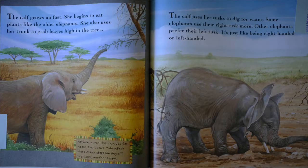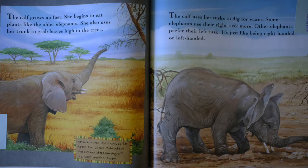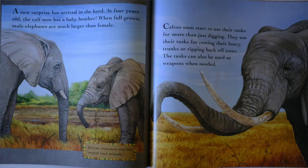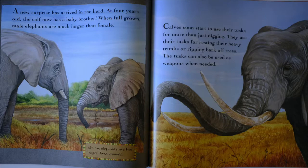The calf uses her tusks to dig for water. Some elephants use their right tusk more. Other elephants prefer their left tusk. It's just like being right-handed or left-handed. A new surprise has arrived in the herd. At four years old, the calf now has a baby brother. When full-grown, male elephants are much larger than females. Calves soon start to use their tusks for more than just digging. They use their tusks for resting their heavy trunks or ripping bark off trees. The tusks can also be used as weapons when needed.